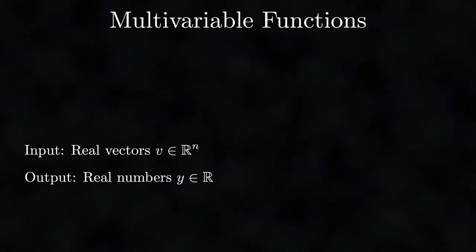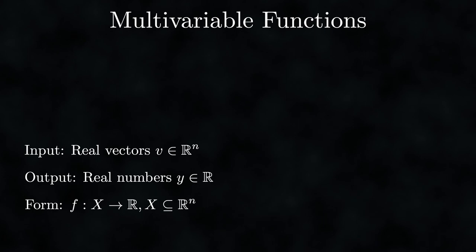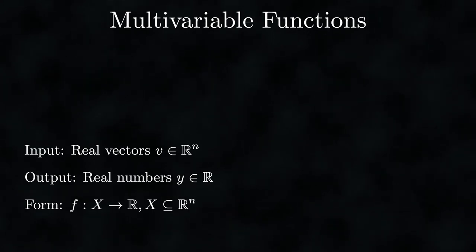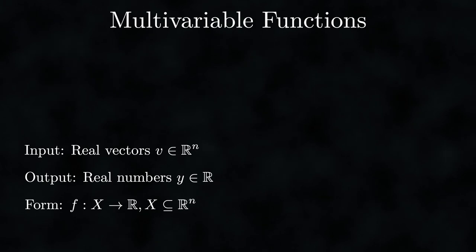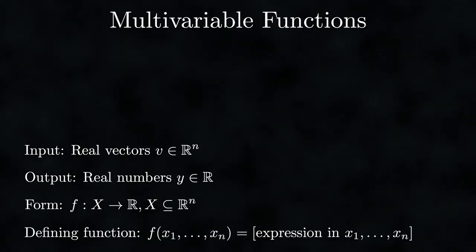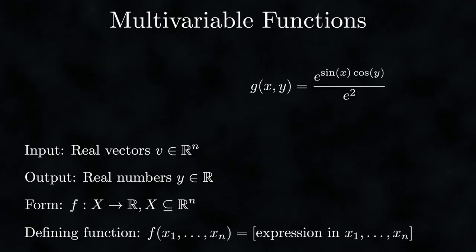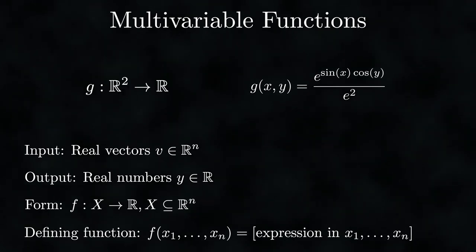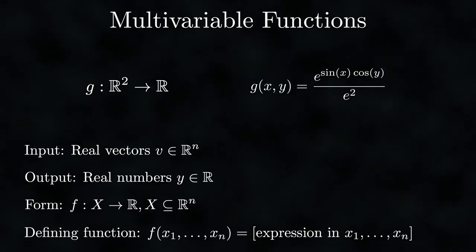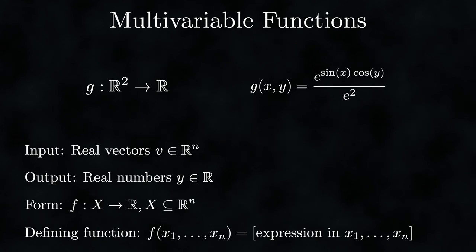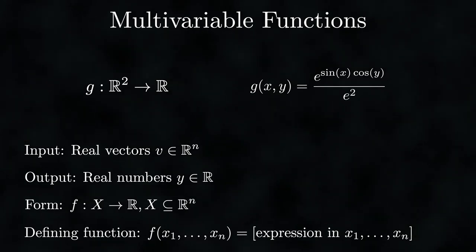For functions that accept vectors instead of real numbers — called multivariable functions — we extend the single variable notation. We simply specify the rule using multiple variables: g(x, y). This is a function of the form g maps real numbers squared to real numbers. We cannot visualize multivariable functions the same way as single variable functions, so we use alternative methods. A favorite is the height field: a 2D surface in 3D space where x and y coordinates correspond to input and the z coordinate corresponds to output.